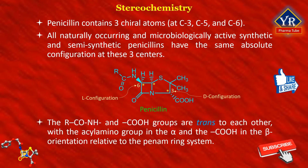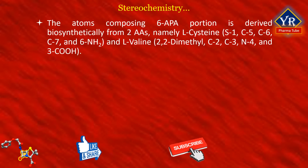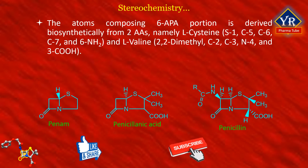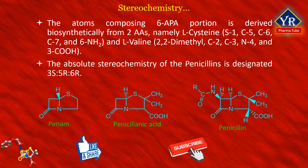The acylamino and carboxyl groups are trans to each other, with the acylamino group in the alpha and the carboxyl group in the beta orientation relative to the penicillin ring system. The atoms composing the 6-aminopenicillanic acid, abbreviated 6-APA, portion of the structure are derived biosynthetically from two amino acids, namely L-cysteine and L-valine. The absolute stereochemistry of the penicillins is designated 3S, 5R, and 6R.